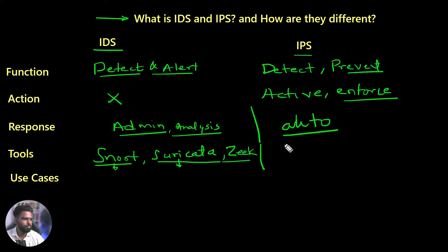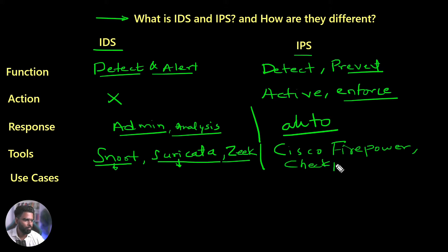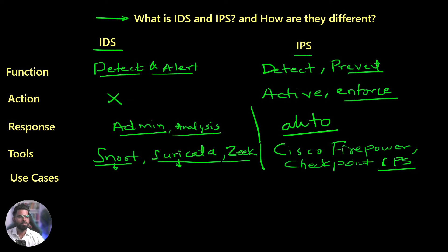When it comes to IPS, most IPS software tools are commercial. The most popular is Cisco Firepower, and Checkpoint IPS is also very popular. You can also use Suricata for IPS, and Snort as well, but you need additional intervention — additional rules and a powerful policy mechanism. You can use Snort or Suricata integrated with open source tools like ELK or Wazuh as well, making it completely open source and free.